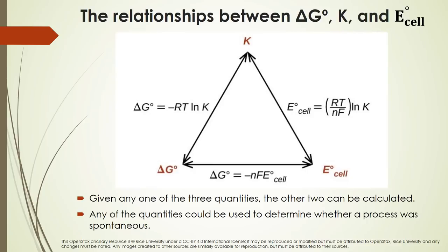Here is a figure showing the relationships between delta G, the equilibrium constant, and the cell potential — essentially three sides of a triangle. If we have any one of the three quantities, we can calculate the other two. Any of these quantities can also be used to determine whether a process is spontaneous.